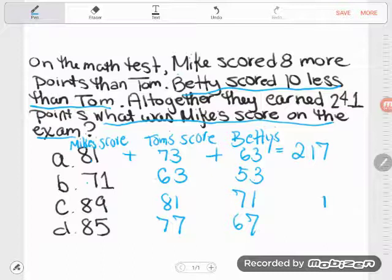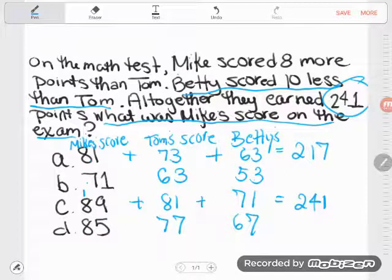So what I just got when I added these three scores was they did come to 241. I needed something that would come to 241 - this did.